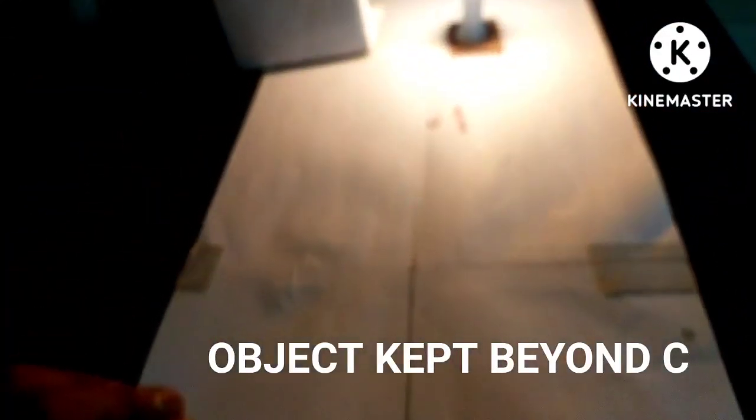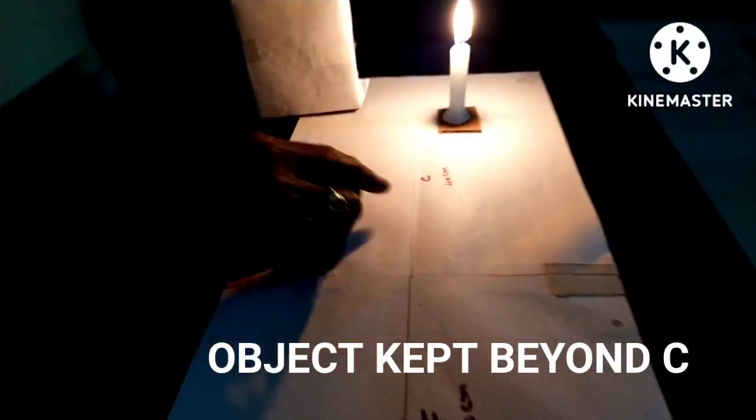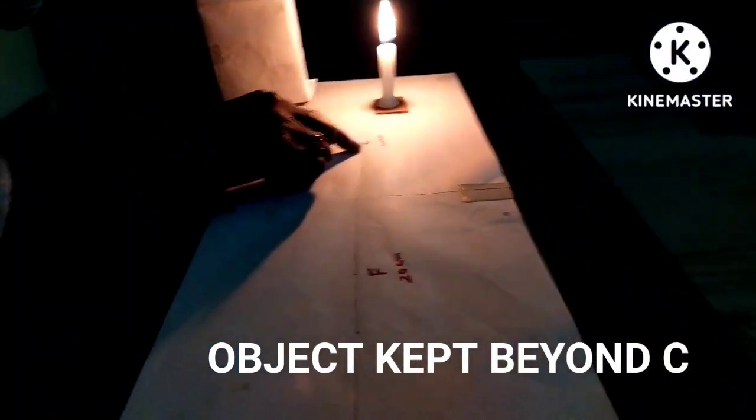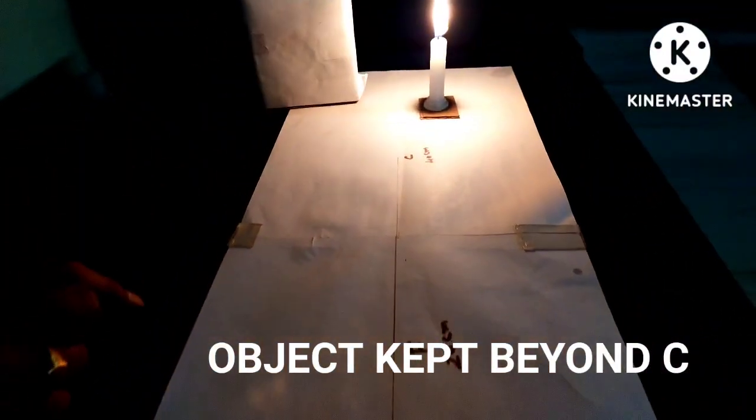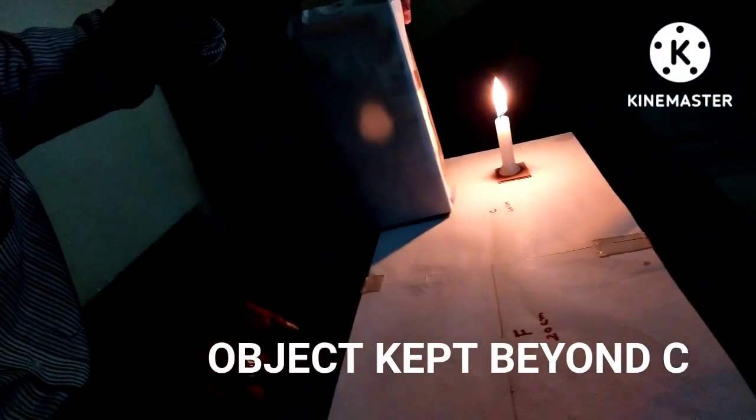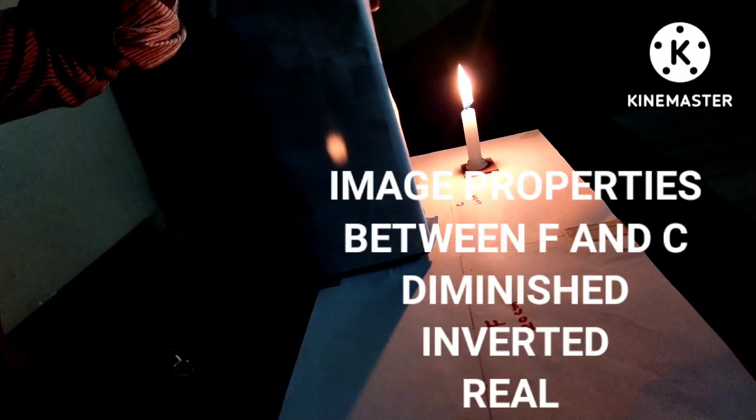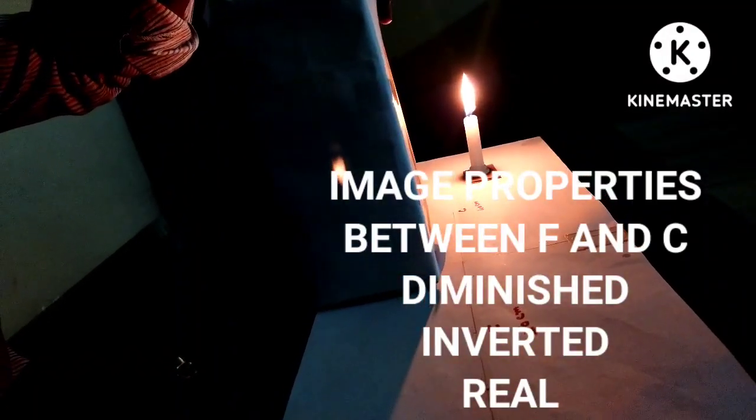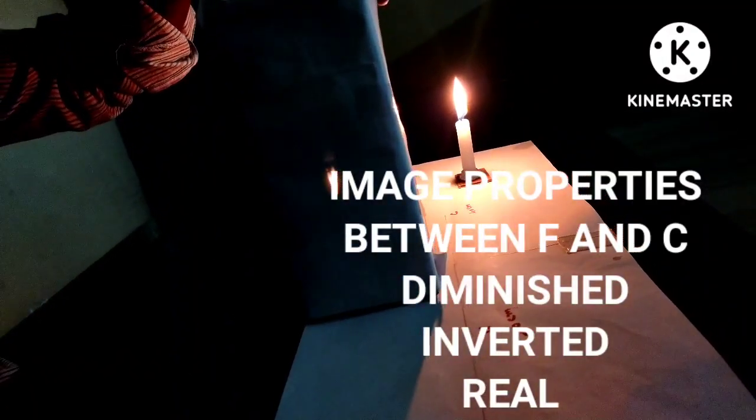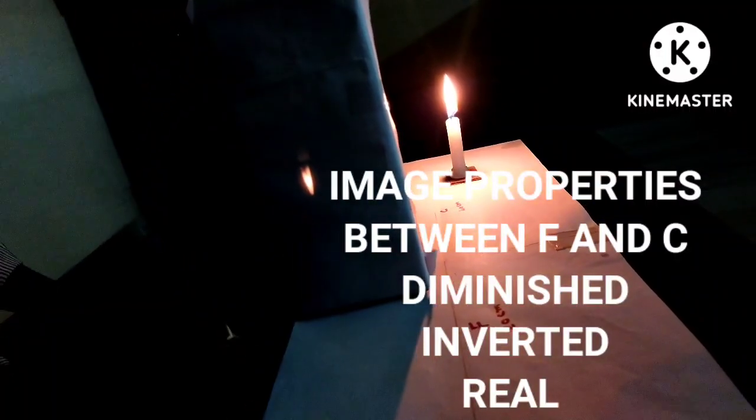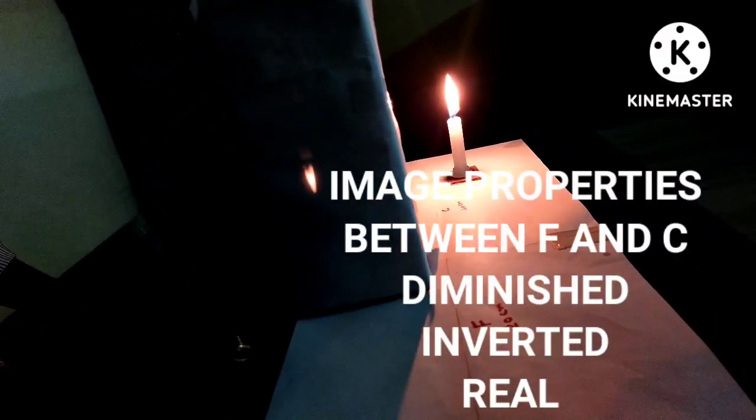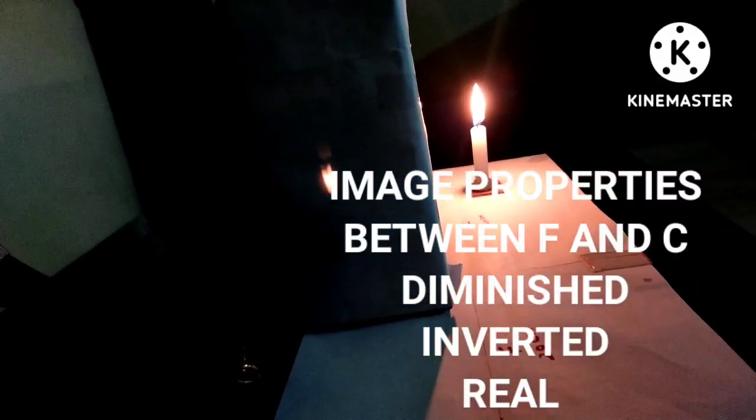Now the object is kept beyond C. Observe the image formation and adjust the screen. Between F and C, sharp image is formed. It is diminished, inverted, and real.